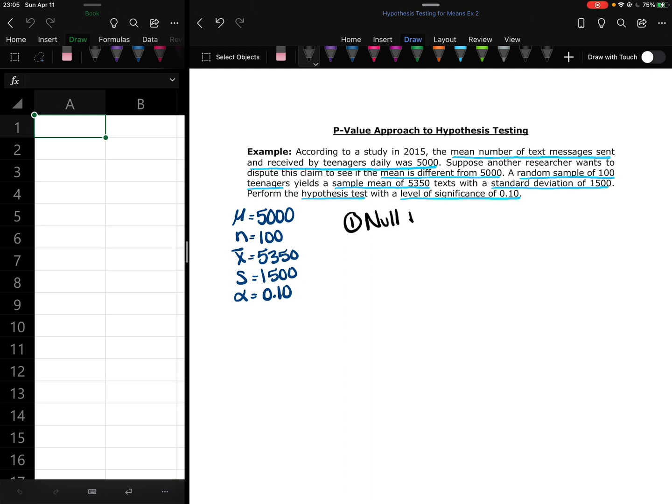So the null and alternative is the first step. Null starts with H₀ and is always going to be the parameter mu. It's always going to be equal. It's not always going to be mu, but it's always going to be the parameter, which in this case is mu because we're looking at means. It's always equal to, because we're assuming that the parameter is equal to whatever value we have been given, which in this case is 5000.